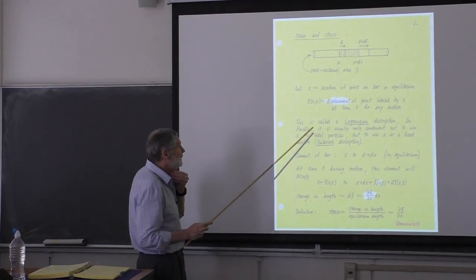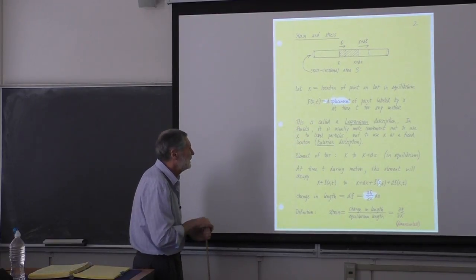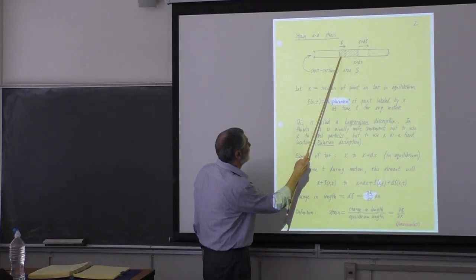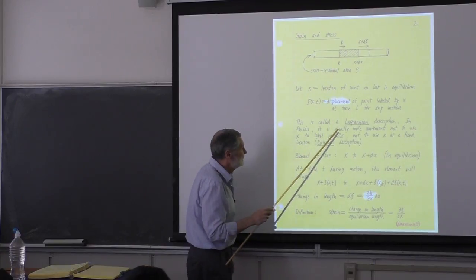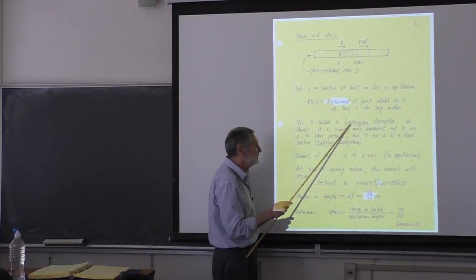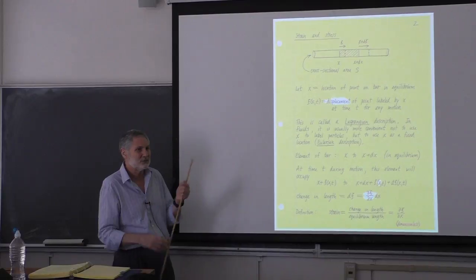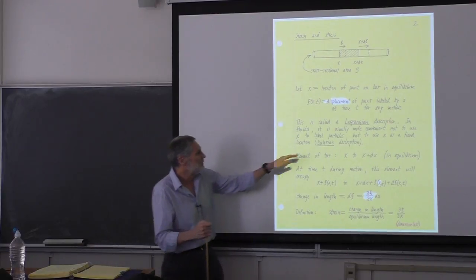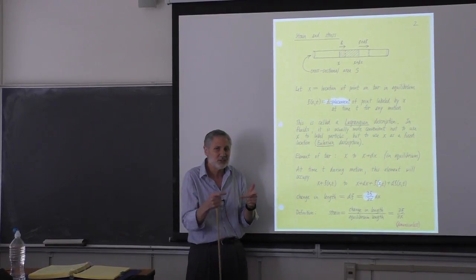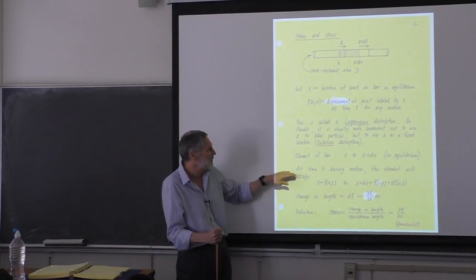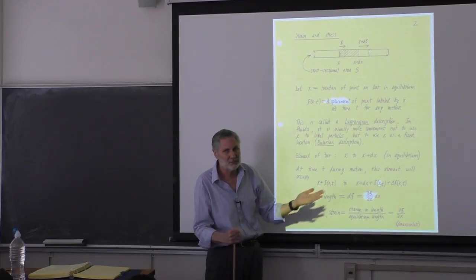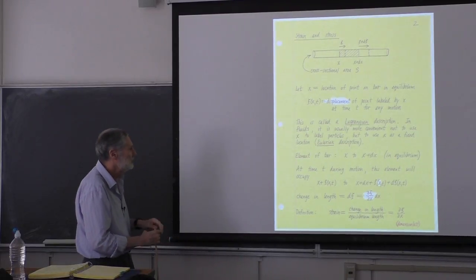Incidentally, we're letting x denote a point on the bar in equilibrium. This is called a Lagrangian description. The reason it has a name is it's not the only description you can use to describe a continuum. In fluids we use an Eulerian description — there, x is just the spatial coordinate in a laboratory frame. That's what we'll use next quarter to do sound. So there's a little bit of a distinction here.